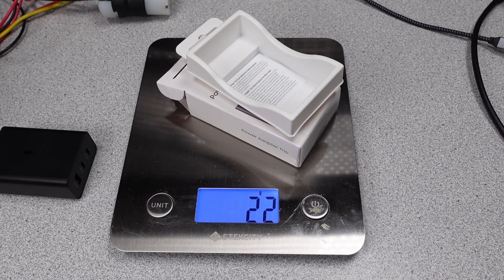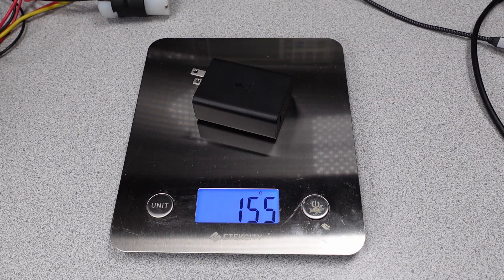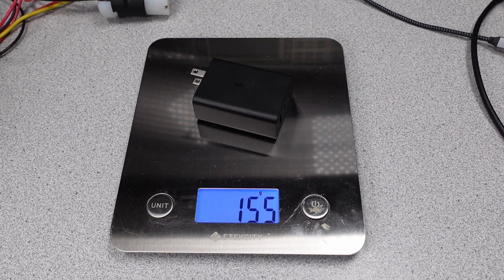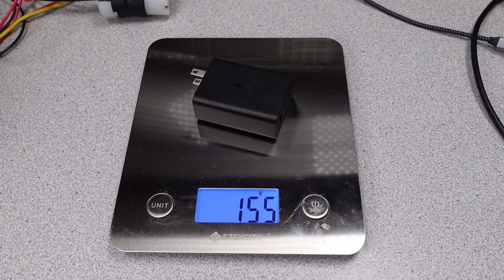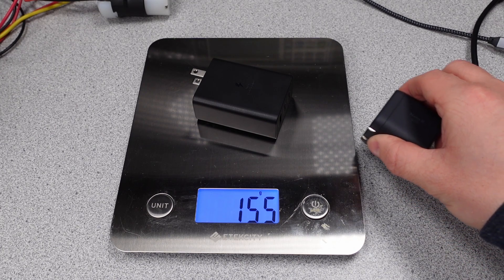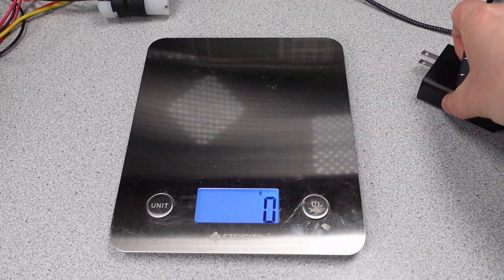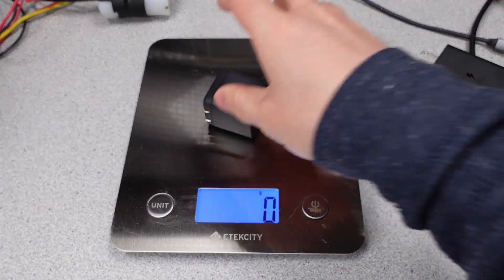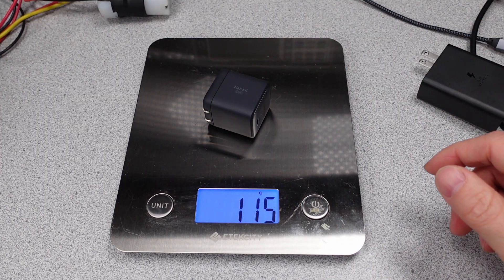The packaging weighs 22 grams, quite light. The power adapter weighs 155 grams, definitely on the heavy side. When compared with the Anker Nano 2 65 watt, that only weighs 115 grams.